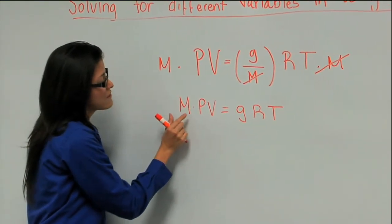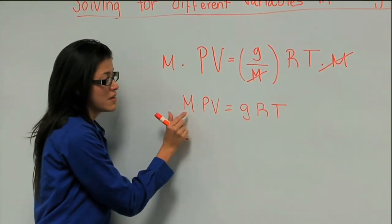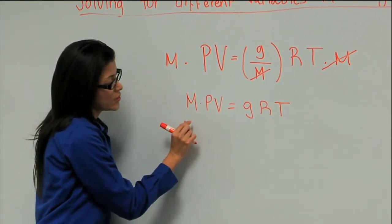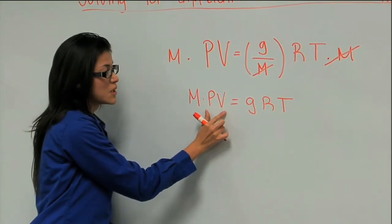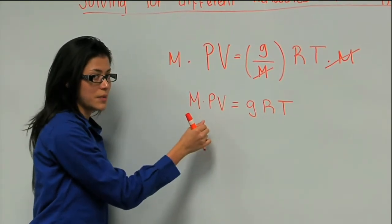But we still don't have M by itself. We need to have M by itself. So we need to get rid of the PV term here. Since it's multiplying, we have to divide by PV.